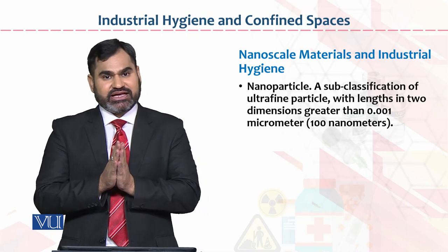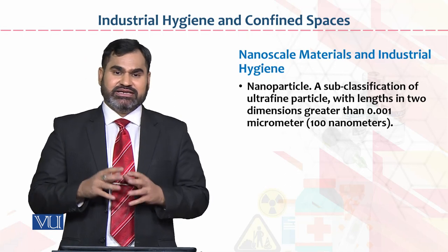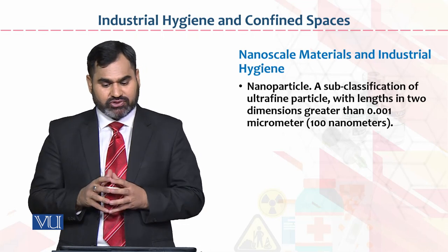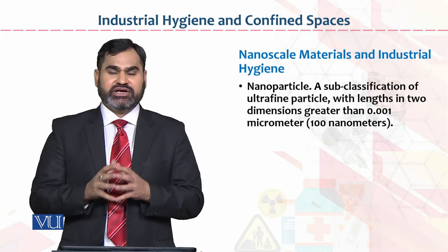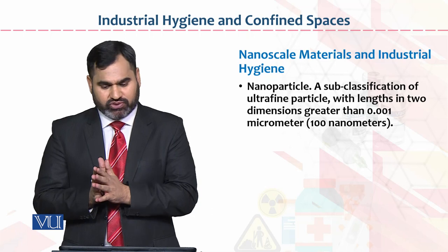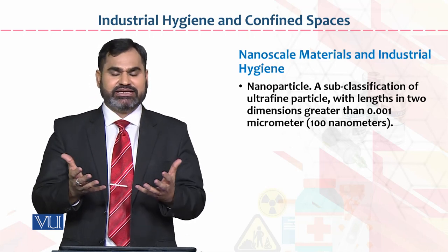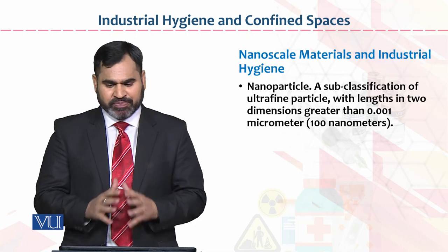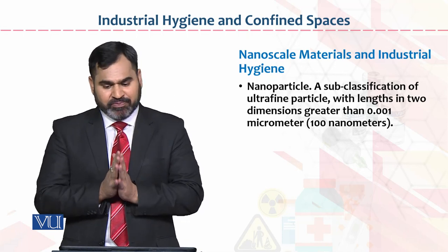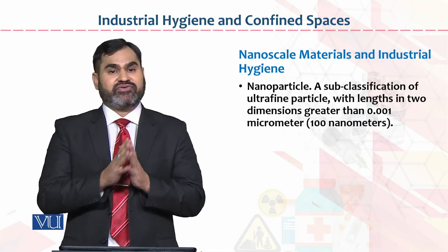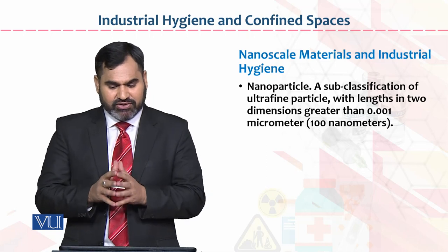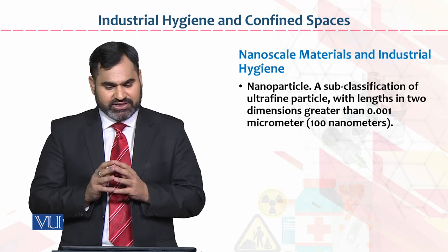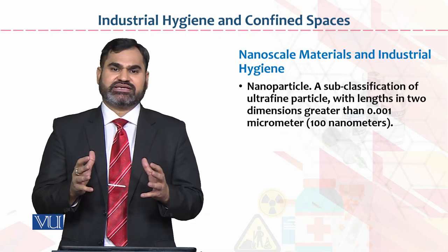Nanoparticle kya hai? It is a sub-classification of ultrafine particle. Yeh kisi bhi particle ki ultrafine form ki further sub-classification hai, jis mein length in two dimensions greater than 0.001 micrometer, 100 nanometer. Yeh usse bhi zyada minute niche level pe iss ki length hogi. Basically nanoparticle sub-classification hai ultrafine particle ki, jis ki length 100 nanometer ke hawaale se greater than 0.001 se hogi, aur jiske do dimensions honge.